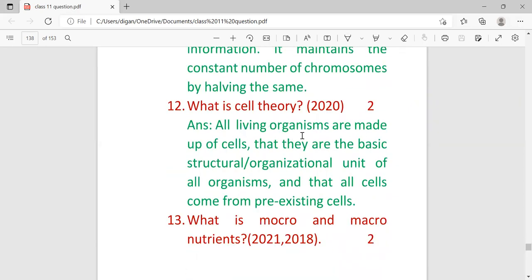What is cell theory? All living organisms are made up of cells. They are the basic structural and organizational unit of all organisms, and all cells come from pre-existing cells. This question also came in 2021. I forgot to write here. So this question repeated continuously two times.